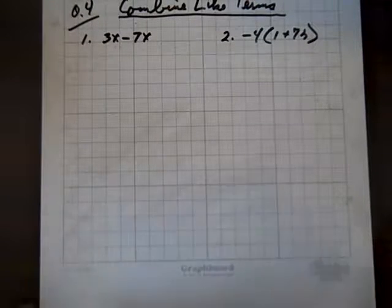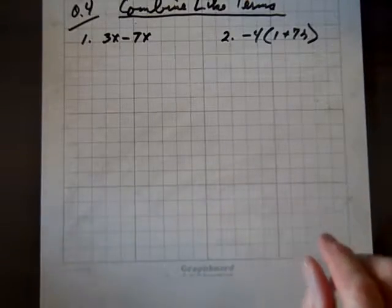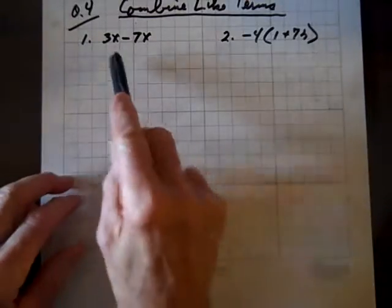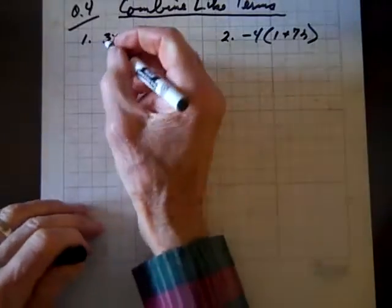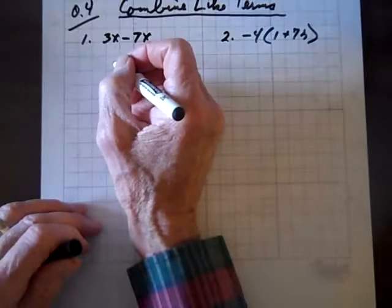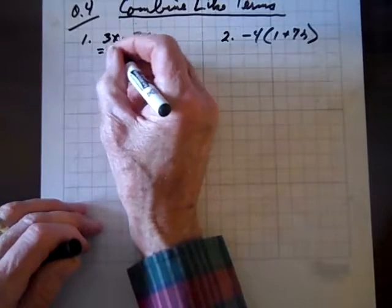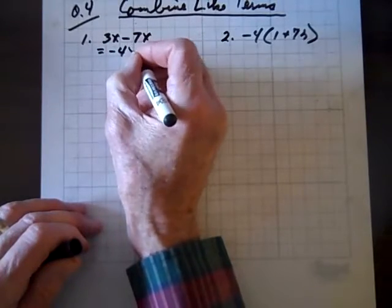So for section 0.4, our task is to combine like terms. 3x and 7x are like terms, so 3x minus 7x is going to be negative 4x.